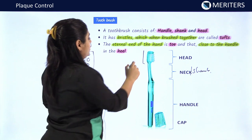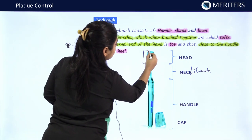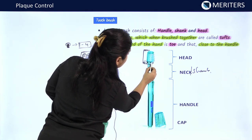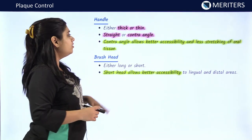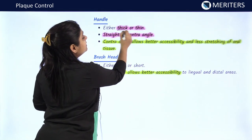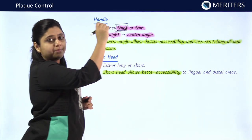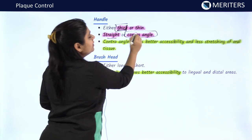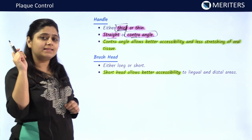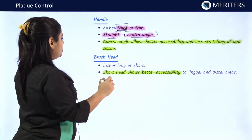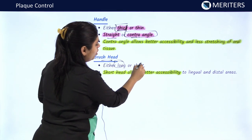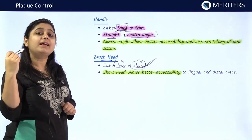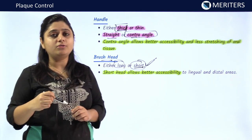In each row there may be six to twelve tufts. The upper portion of the head is known as the toe and the lower portion is known as the heel of the brush. The handle may be thick or thin; thick-handled toothbrushes are preferred because they can be better maneuvered. The handle may be straight or counter-angled; contra-angled toothbrushes are more preferred for better accessibility and reach.